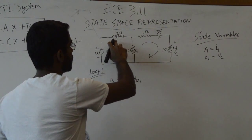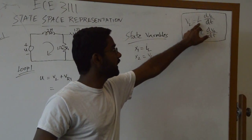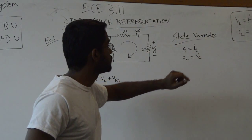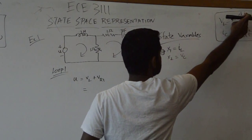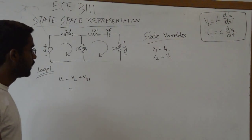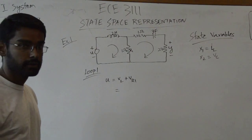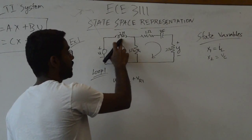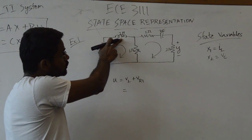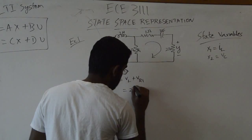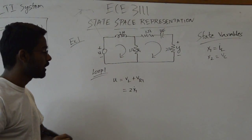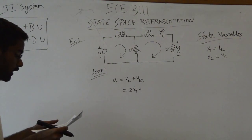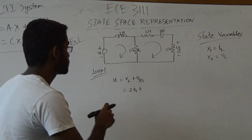The voltage across the inductor is L times dI_L/dt. Since we defined I_L as x1, this becomes L times x1_dot, written as x1-dot. In our case the inductor value is 2, so it is 2 times x1-dot.